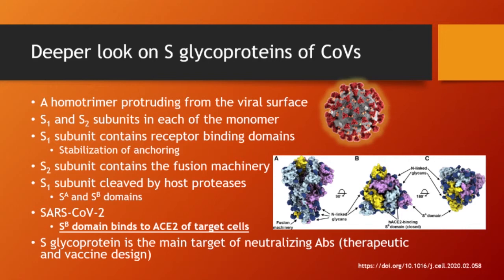Looking deeper, the S1 subunit has the S-A domain and the S-B domain. The S-B domain binds to ACE2 of the target cell. This is a key message — it's a key finding useful for developing future vaccines and therapeutics. The figure shows these glycoproteins and glycans. In an upright orientation, it looks like a mushroom head — three subunits viewed from the top, and when rotated 180 degrees, you see the bottom view of how the three subunits knit together.